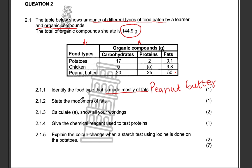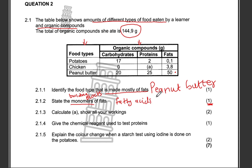State the monomers of fats. Remember monomers are building blocks. So what are the building blocks of fats? We know that the building blocks of fats are fatty acids and glycerol — three fatty acids and one glycerol.